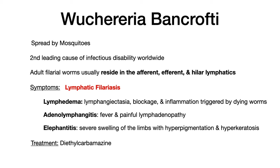Wuchereria bancrofti is spread by mosquitoes and is the second leading cause of infectious disability worldwide. Adult filarial worms reside in the afferent, efferent, and hilar lymphatics. Symptoms therefore involve problems with lymphatic drainage and flow. The main condition is lymphatic filariasis, within which you can see lymphedema due to lymphangiectasia, blockage, and inflammation triggered by dying worms in the lymphatics — the worms reside in the lymphatics, die, block the lymphatic ducts, and cause lymphangiectasia, collectively resulting in lymphedema.